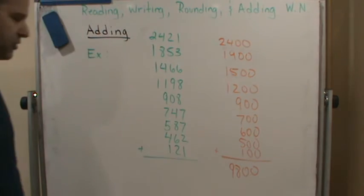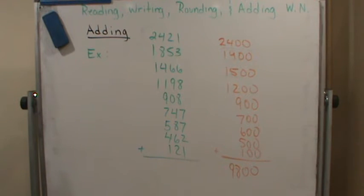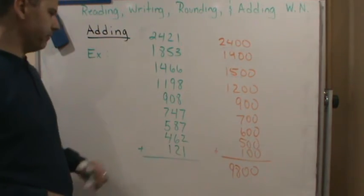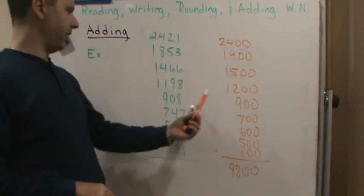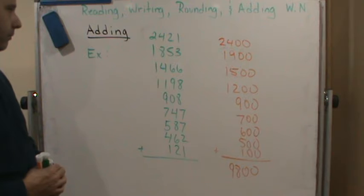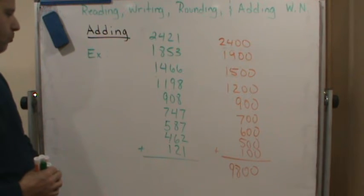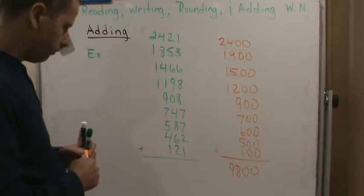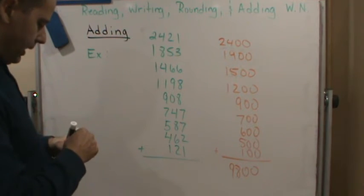Okay, so my answer should be close to 9,800. So let's add. I'm going to add right to left. I can also add left to right. And so how do we do this?